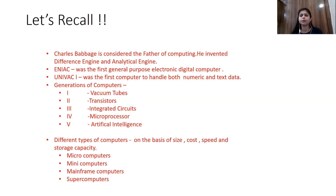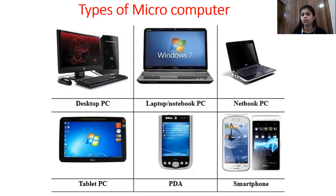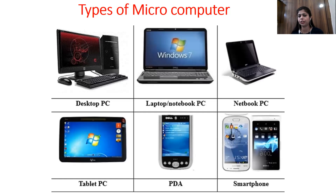In the fifth generation — the present and future — we are using artificial intelligence as the technology behind it. On this basis, we have numerous types and varieties of computers, classified on the basis of size, cost, speed, and storage capacity. The smallest are microcomputers, also known as personal computers, then mini computers, mainframe computers, and supercomputers. Today we will look at how these different kinds of computers work. I gave you an activity previously to prepare a collage of different types of microcomputers.